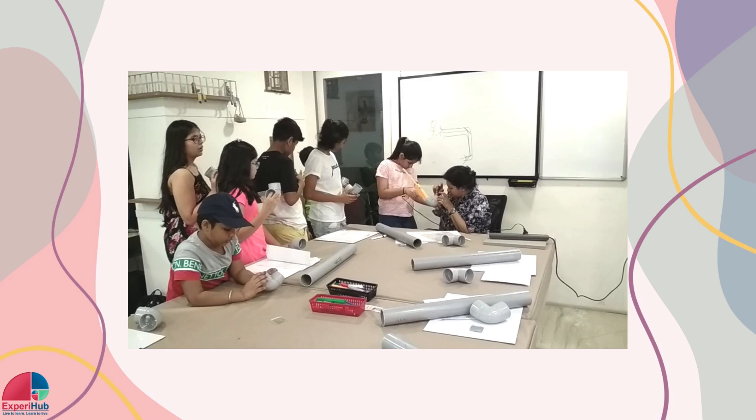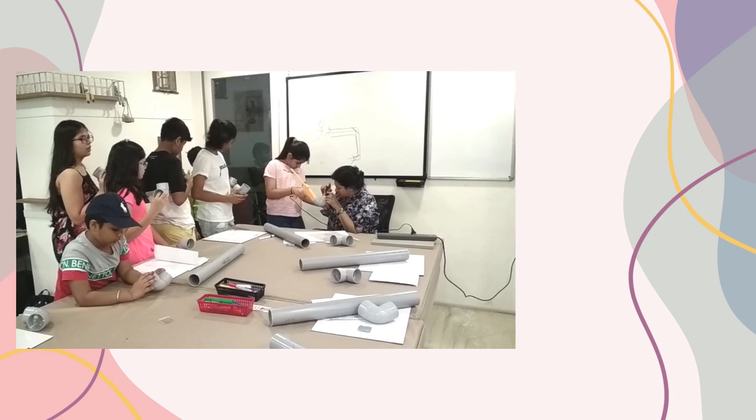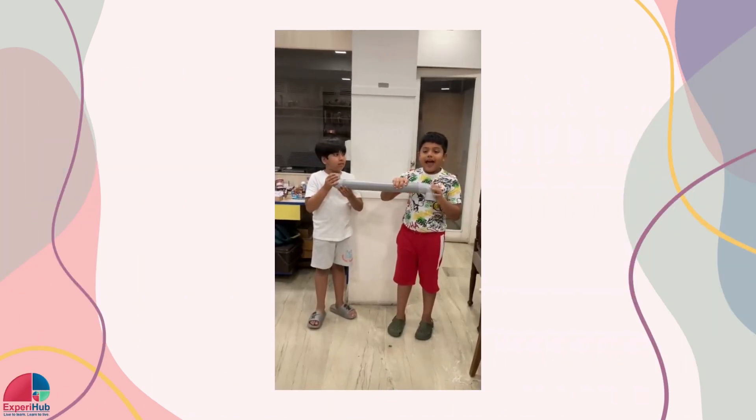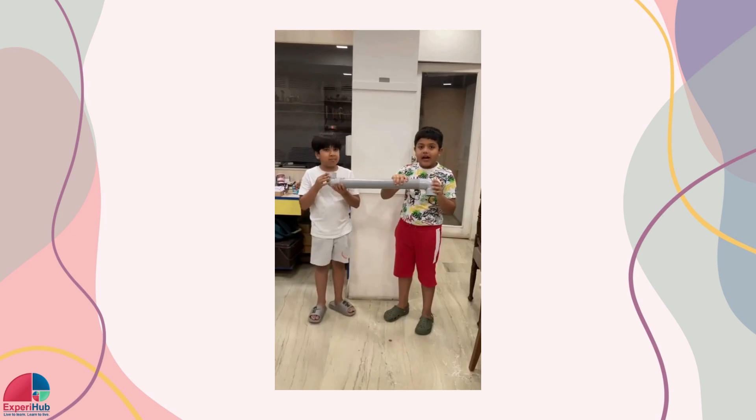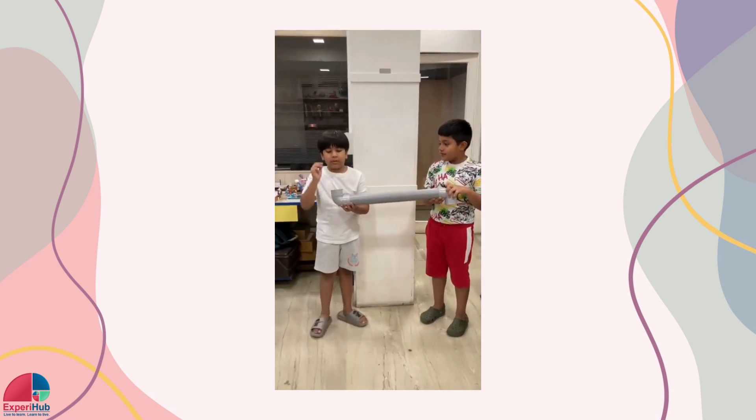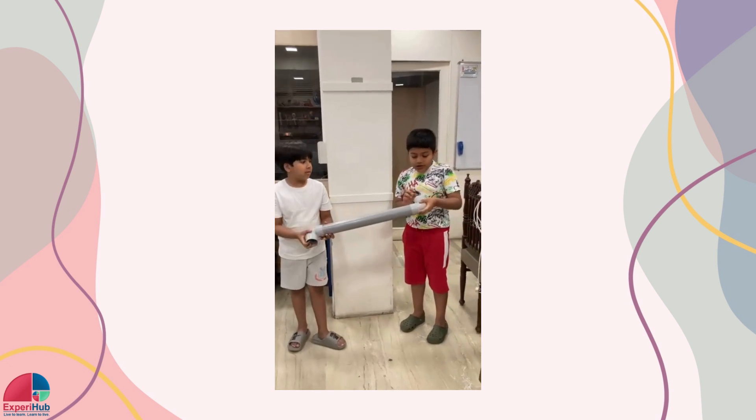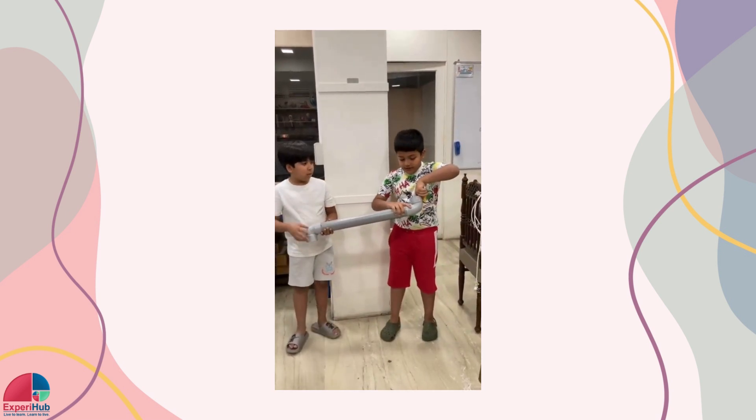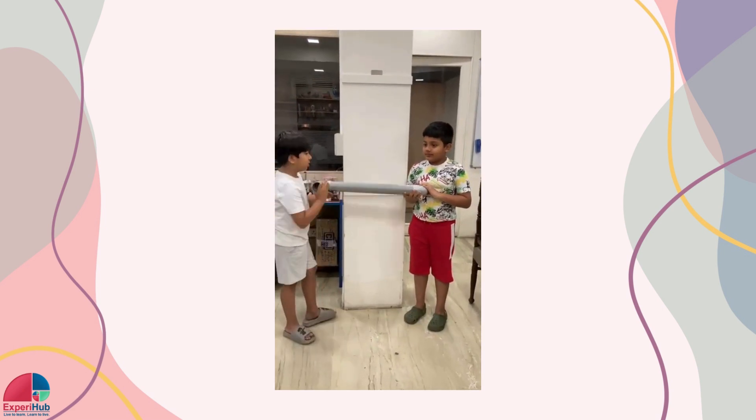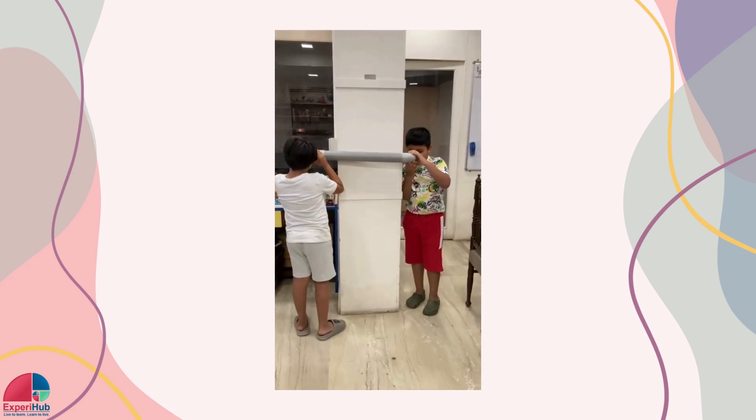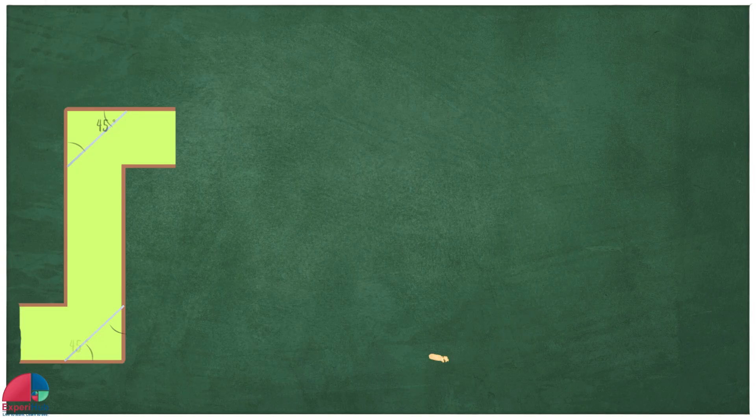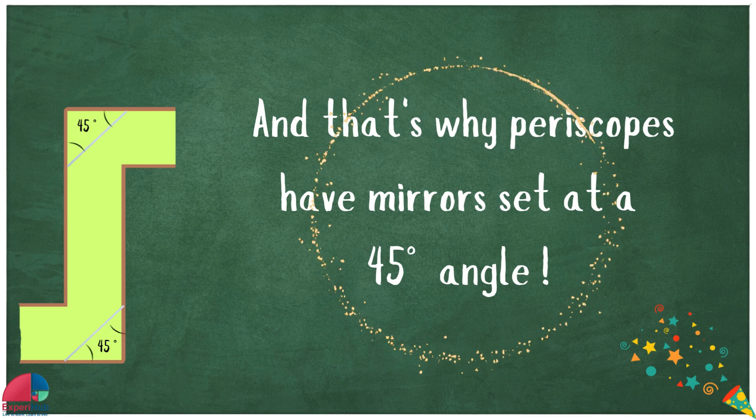At our center XperiHub, you can perform experiments by your own, like this one. And that's why periscopes have mirrors set at a 45 degree angle.